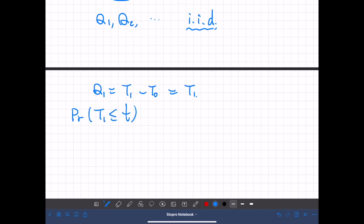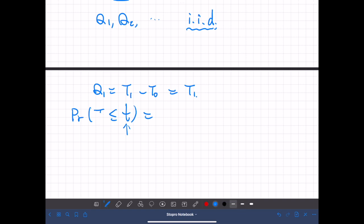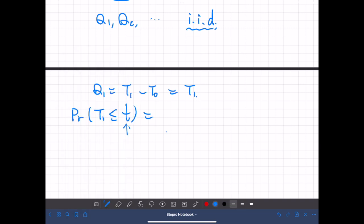So let's specify some value of time, lowercase t. This probability means the first increment of the Poisson process is less than some specified value. This is t1. So this means that n of t is greater than or equal to 1.